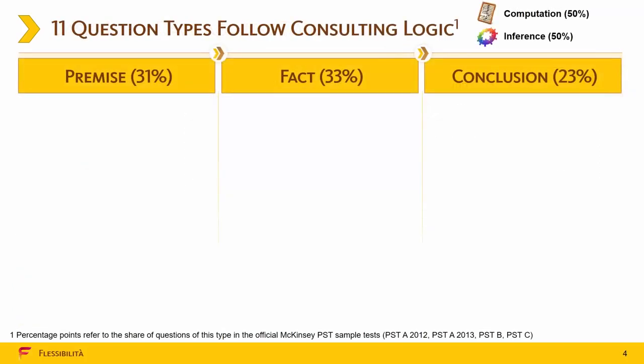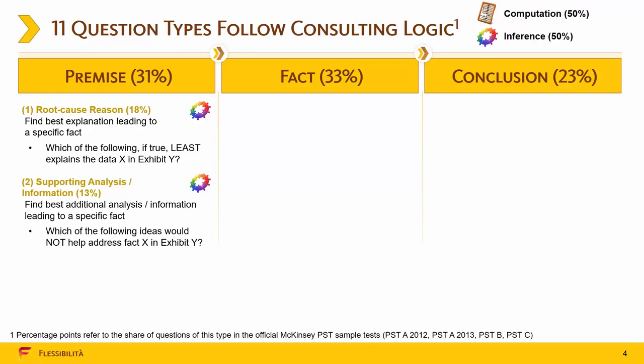Let us use our structuring skills to tackle the first problem of the course, bringing order to test questions. The questions closely reflect the flow of formal logic: premise or reason, then fact, then conclusion or result. The test questions are split roughly uniformly among these types. Premise questions fall into two subgroups, and both require logical reasoning or inference but not calculations. The first subgroup is the root cause reason questions, in which you need to find an explanation to a specific fact. Questions like which of the following if true would best or would least explain the data in Exhibit 1 all fall into this category.